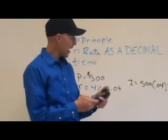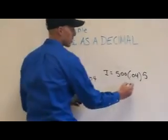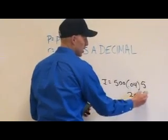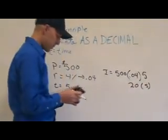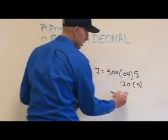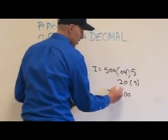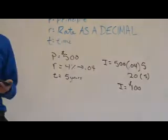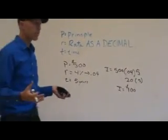And that is 20. So 500 times .04 is 20. We times that by 5. And the interest, the interest that we would get paid is $100.